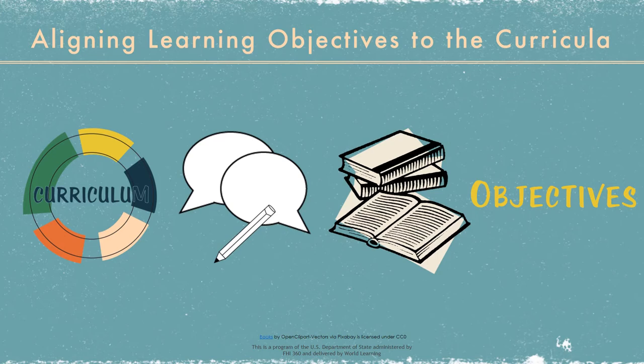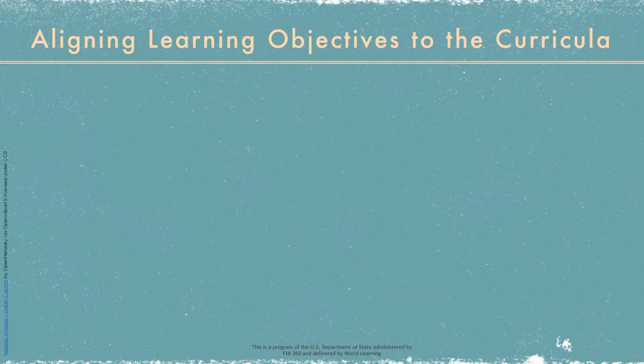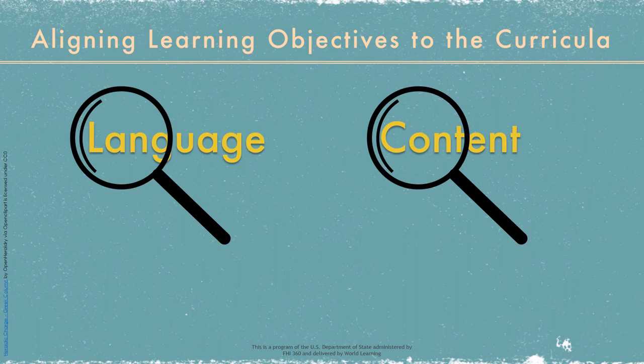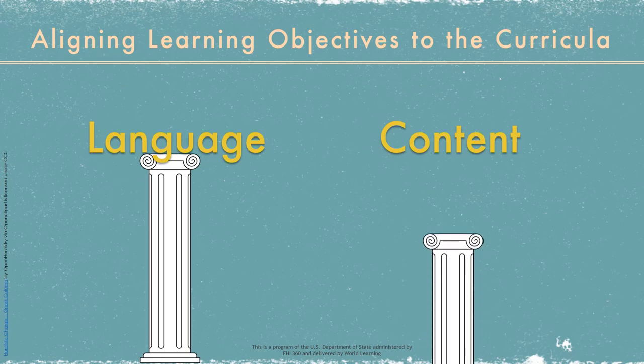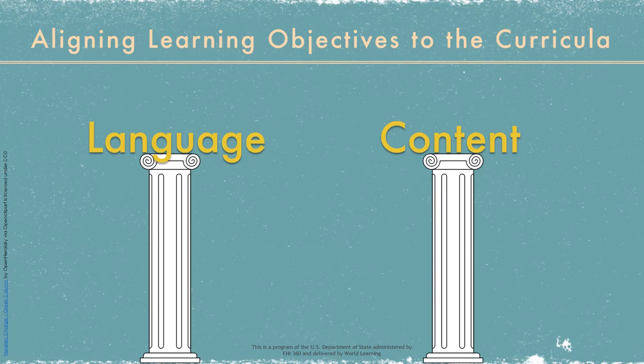If you want to teach something, you need to have materials and activities that meet your students at their current level of knowledge and ability. These materials and activities should both challenge as well as guide students to learn more and improve their skills. While incidental learning is possible, it is not common. What this means for CBI is that if you want your students to learn both the language and the content, you need to focus on both.